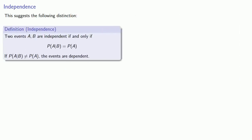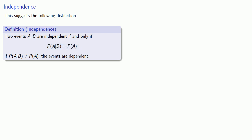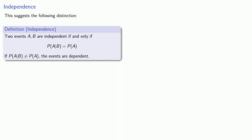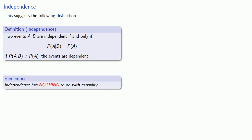This suggests the following distinction. Two events A and B are independent if and only if the probability of A given B is the same as the probability of A. If the probability of A given B is not equal to the probability of A, we say the events are dependent. It's vitally important to understand that independence has nothing to do with causality — event B doesn't cause A to occur, and neither does event A cause B to occur.